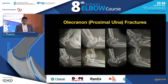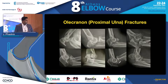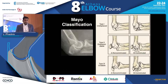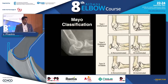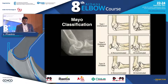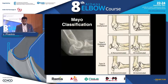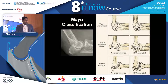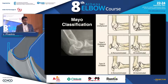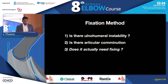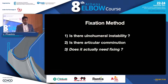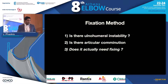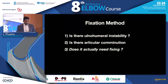Olecranon fractures form part of the proximal ulna, and these proximal ulna fractures are part of a spectrum. We're going to concentrate on olecranon fractures. The classification that's quite useful is the Mayo classification, which divides them into stable or unstable. When deciding which fixation to use, I'm really asking two questions: is there ulnohumeral instability, is there significant articular comminution, and does it actually need fixing? We can treat olecranon fractures non-operatively, but we're going to talk about fixation.